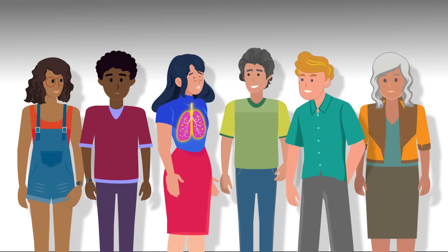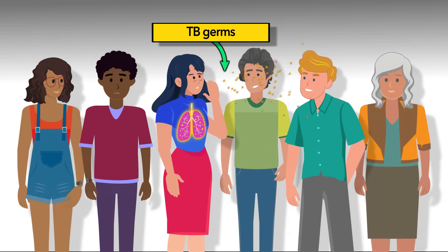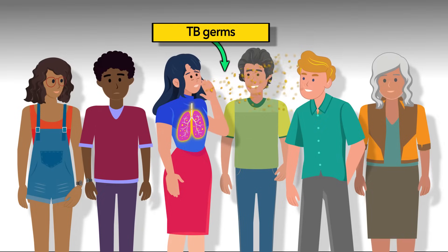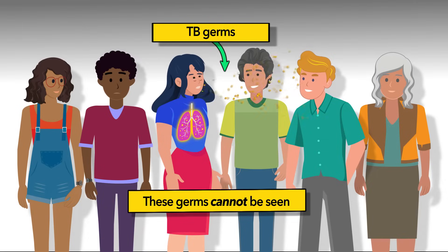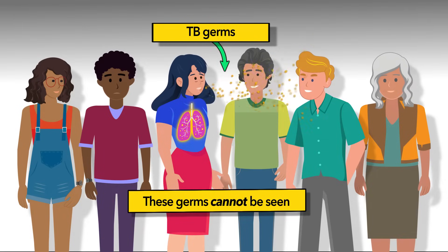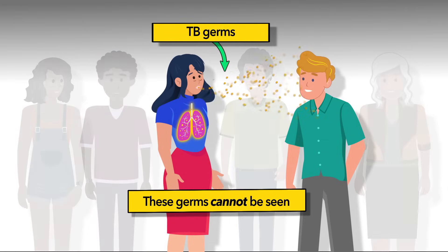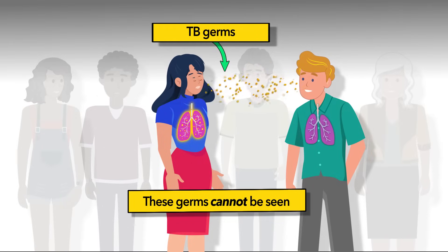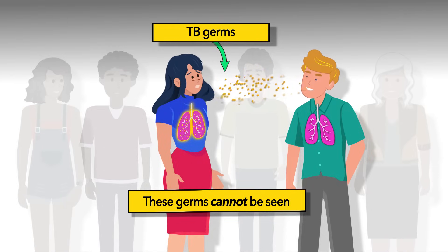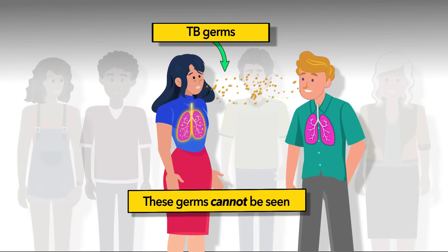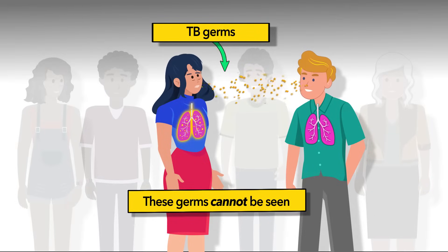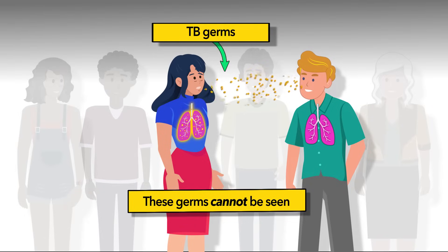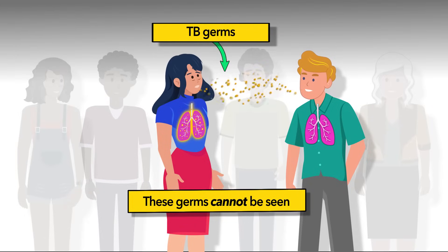When a person has TB disease in their lungs or throat, they can release TB germs into the air when they cough, sneeze, sing, laugh, or speak. These germs are not visible with the naked eye and may remain floating in the air. If people breathe in those germs, they enter their lungs, which can become infected. This is most likely to happen if people spend a lot of time with someone who is sick with TB. Infection is less likely during short encounters, like when meeting someone while grocery shopping or mailing a letter. It's also less likely outdoors.